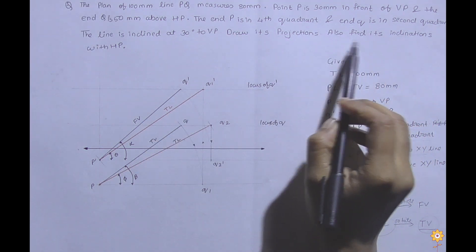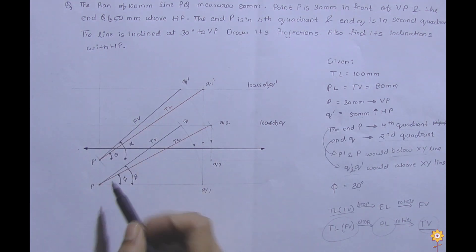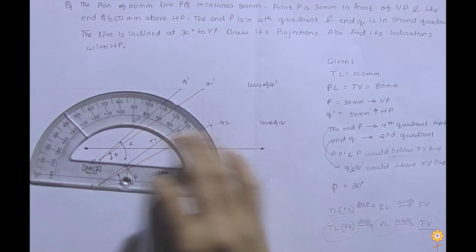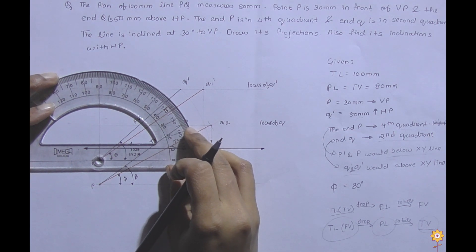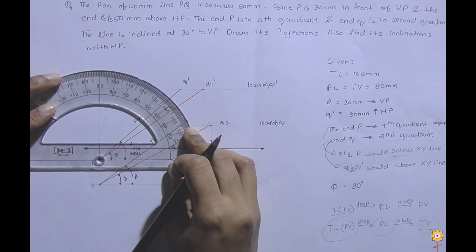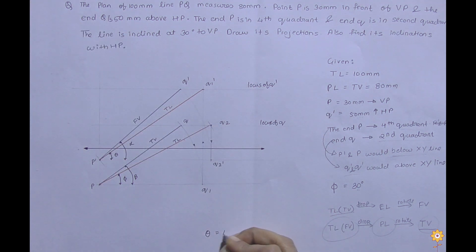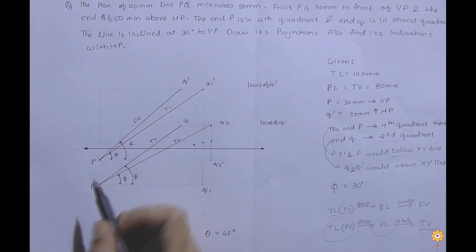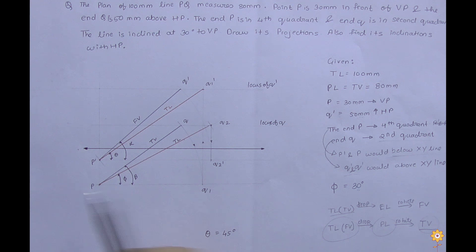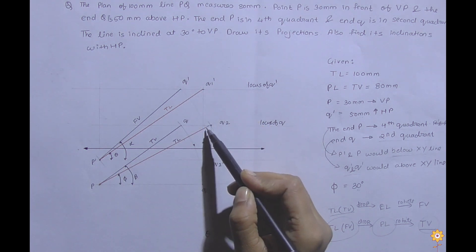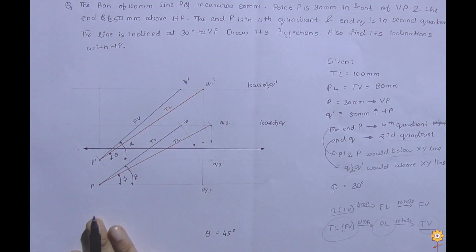In the question we have been asked to find the inclination with HP, which means we have to find theta. My theta, if I measure, is 45 degrees. So this is the complete solution for a question where the first point P is in the fourth quadrant and end Q is in the second quadrant — the line is travelling from the fourth to the second quadrant. Thank you, hope you understood.